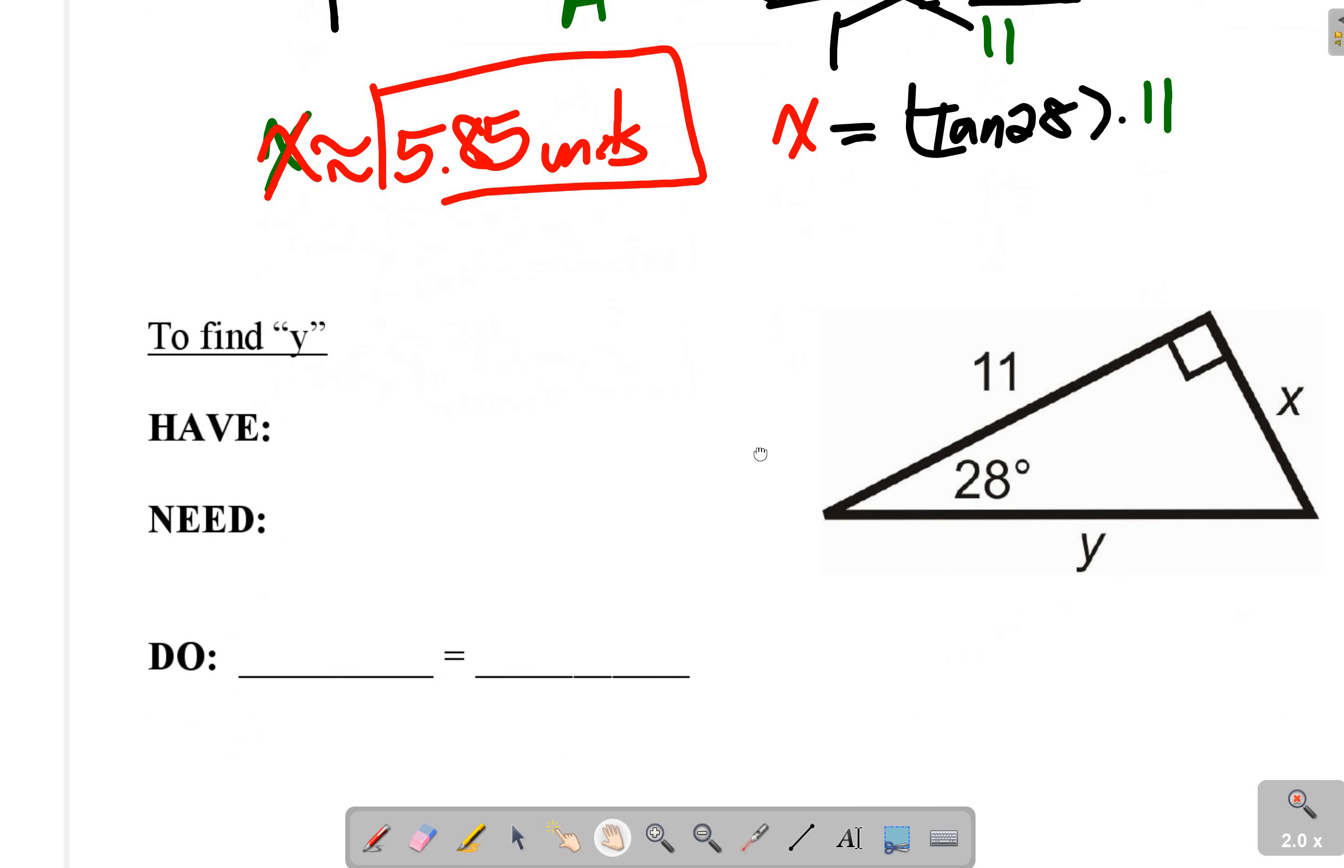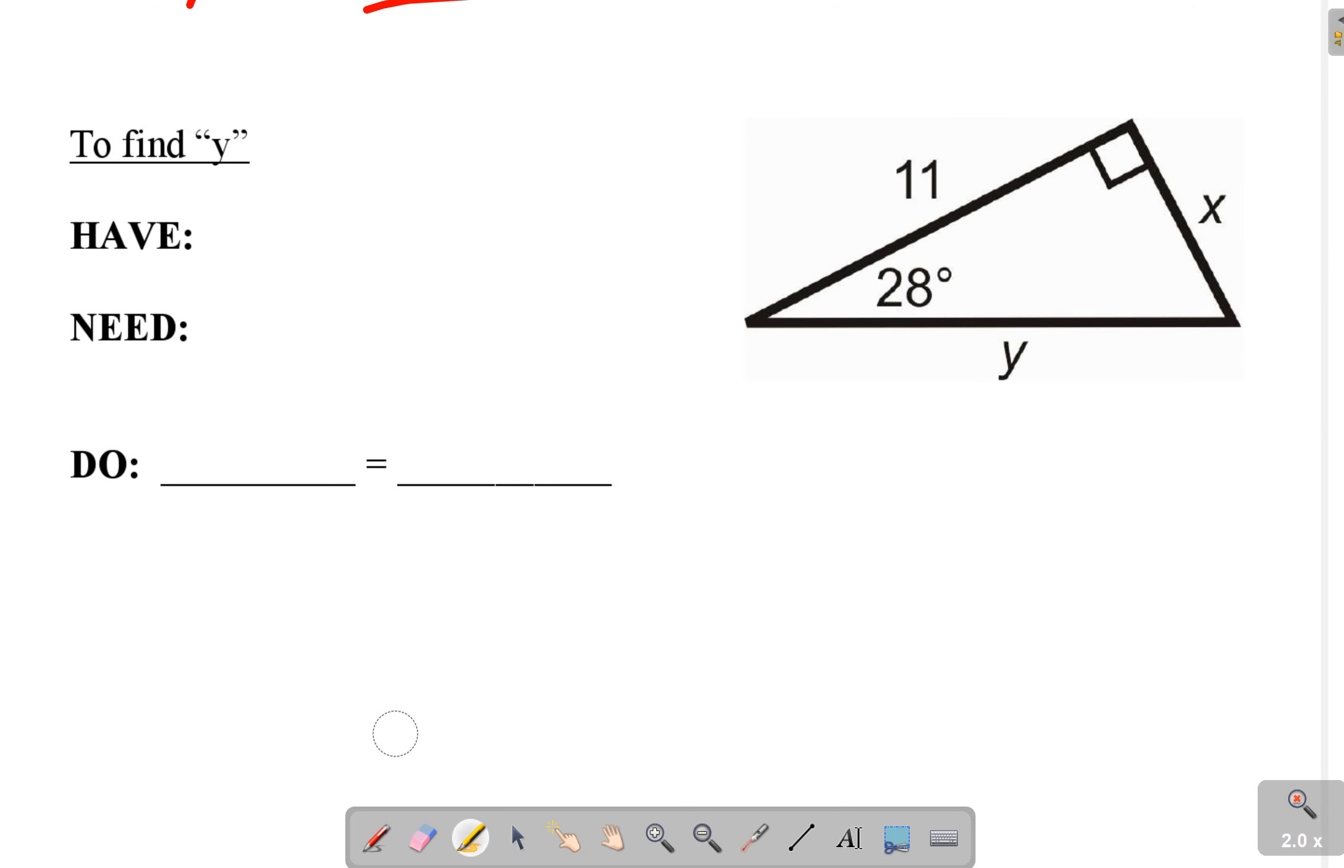Let's do one more. We're going to go for y this time. Let's label our theta. That's 28. Our opposite, adjacent, hypotenuse.